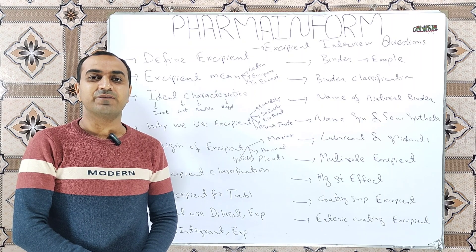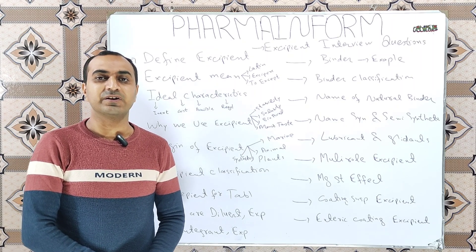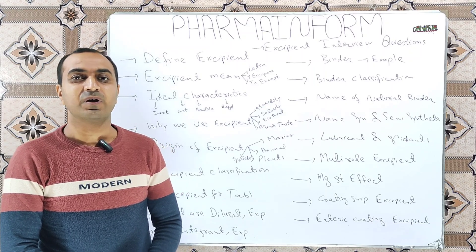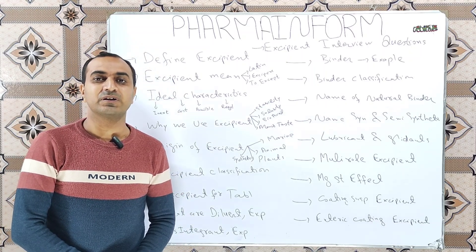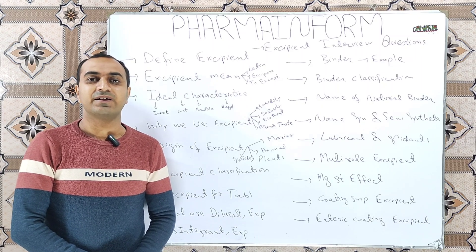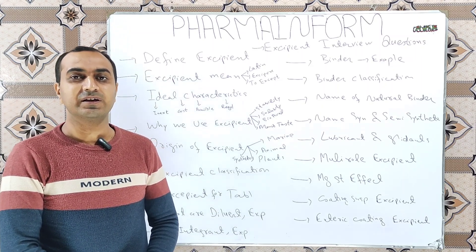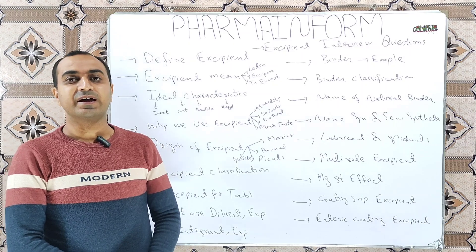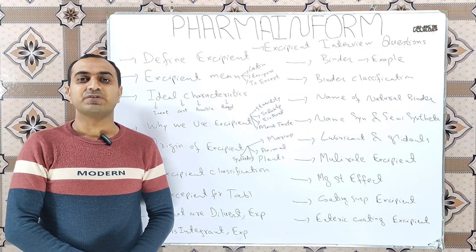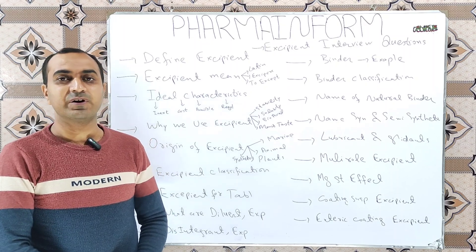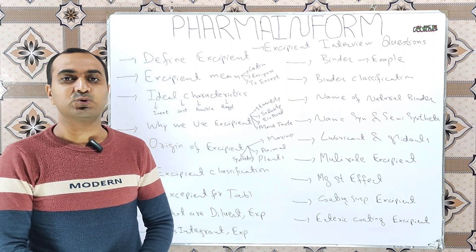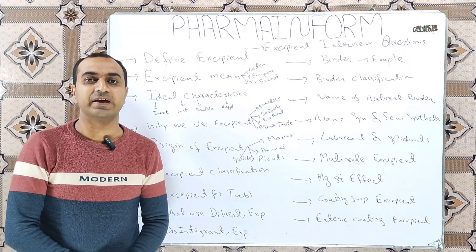Excipients are defined as all those ingredients which are used in a dosage form other than the active pharmaceutical ingredient, and these are pharmacologically inert. The next question is: what is the meaning of excipient? The word excipient is derived from a Latin word meaning 'to accept' or 'other than.'